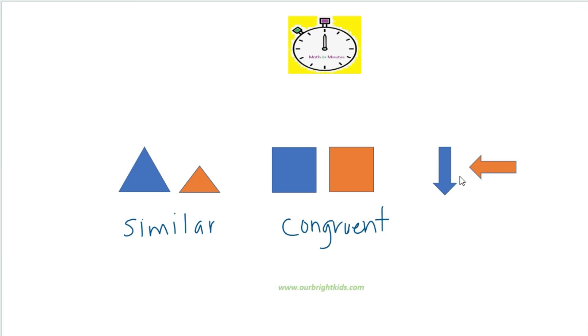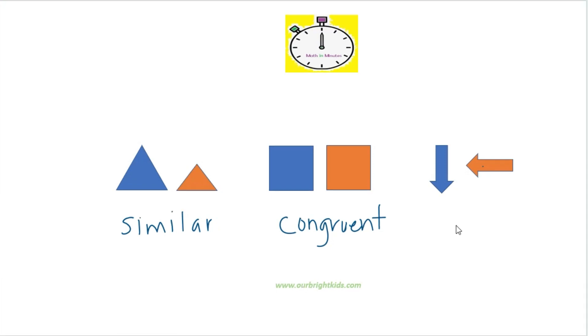So that would be considered congruent. And the last one, the arrows, are they the same size? They're the same shape, and they also are the same size. So they would be congruent.